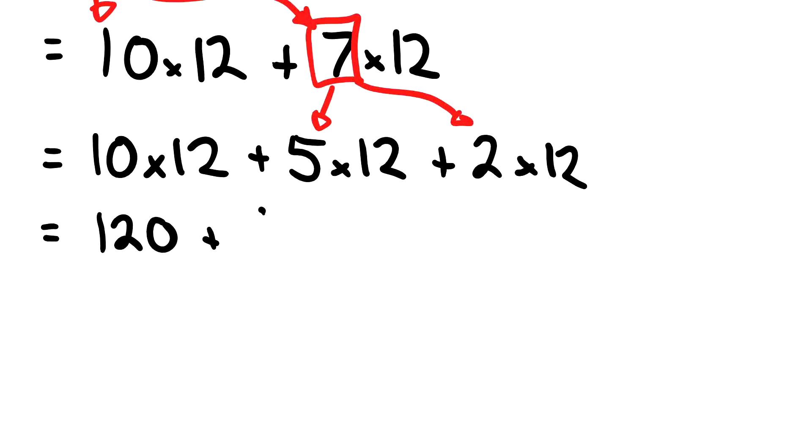And then 2 times 12 is 24. So what I can do now is just add each of these parts together, so I could go 180 plus 24, and then that equals 204.